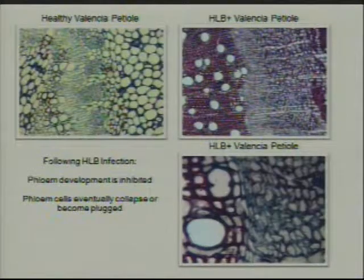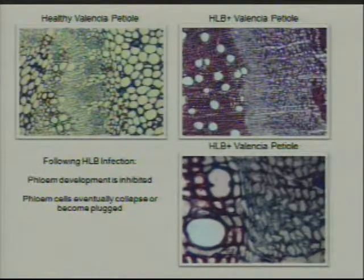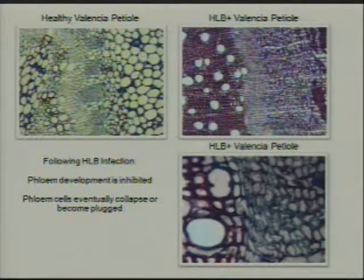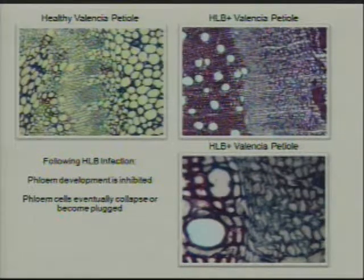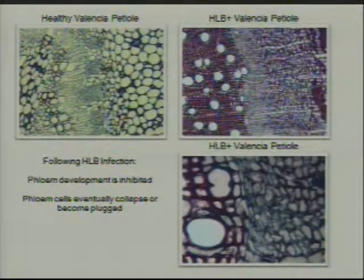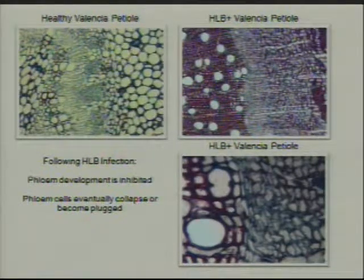If we look at a healthy plant on the left, this is a cross-section through a leaf petiole. There's normal healthy development with distinct bands of phloem separated by parenchyma tissue. We don't think in healthy trees there's much transmission of bacteria from one of these bundles to another neighboring bundle. We also see a healthy dividing layer of cambium leading to xylem development on the inside and the rest of the phloem and parenchyma tissue.